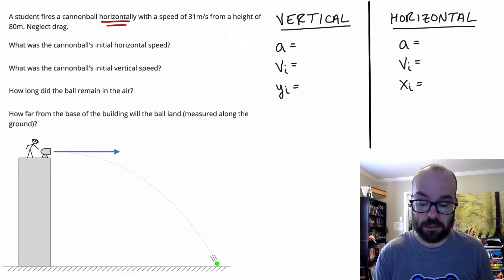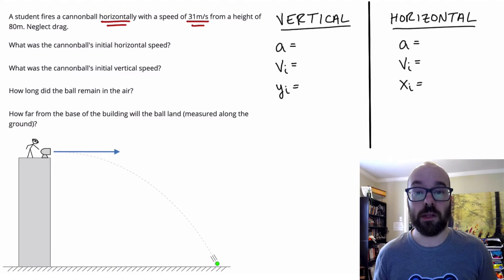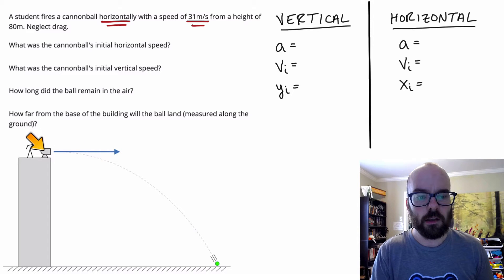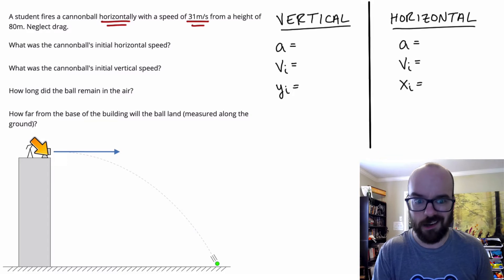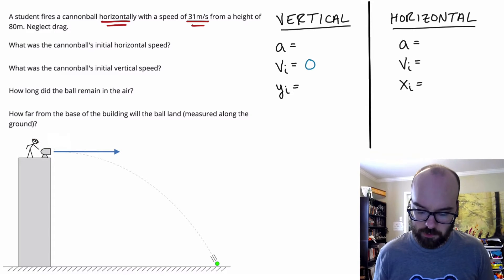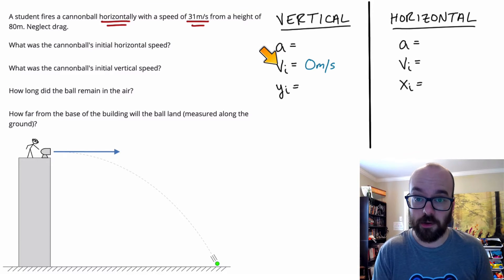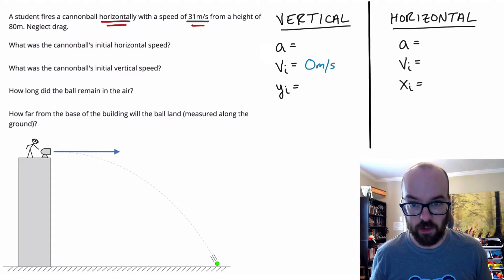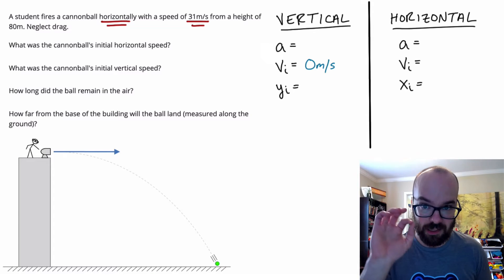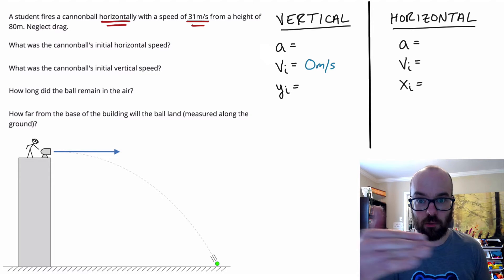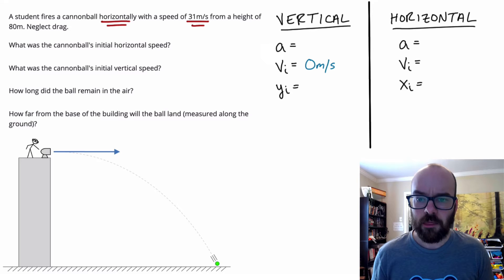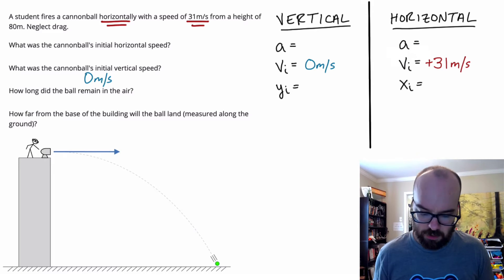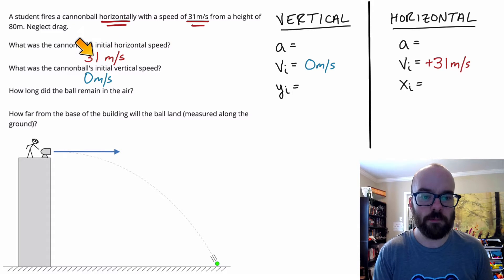Re-reading the problem: a student fires a cannonball horizontally, meaning I'm looking at the side-to-side motion with a speed of 31 meters per second. When it says launched horizontally, that means there's no initial vertical motion — the cannon is pointed to the side, not up or down. So the vertical initial velocity is 0 meters per second. The instant it leaves the cannon, it's not moving up or down. That means the full 31 meters per second is horizontal, so my initial horizontal velocity is positive 31 meters per second, indicating motion to the right.